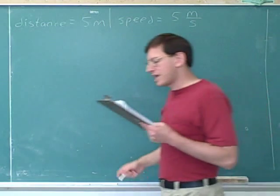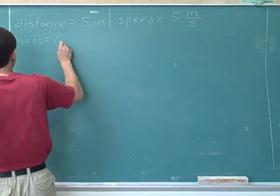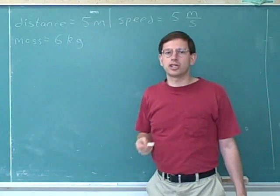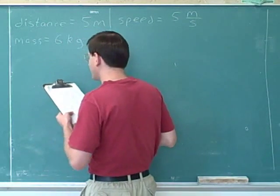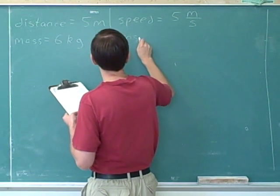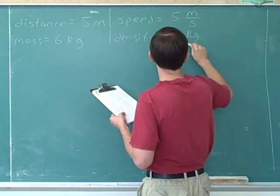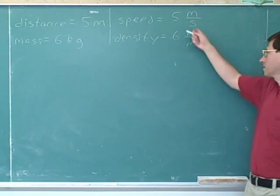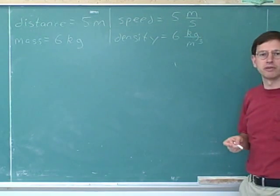Let me give you a few more examples. Let's say an object has a mass of six kilograms. Is kilograms a ratio unit? No, because there's no fraction here. But how about if the object has a density of six kilograms per cubic meter? Is that a ratio unit? Yes — kilograms per cubic meter does form a ratio or a fraction, so this would be another example of a ratio unit.